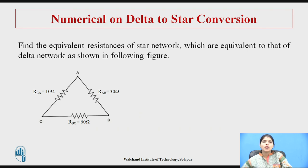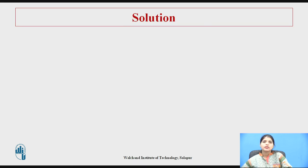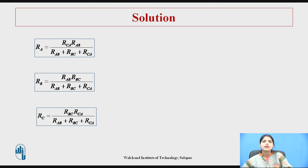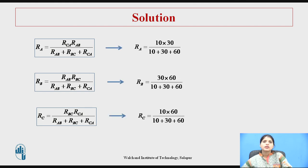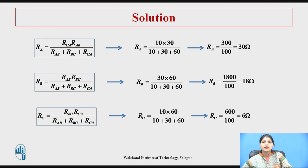Let us see the example of delta to star conversion. Find the equivalent resistances of the star network which are equivalent to the given delta network as shown in the figure. This is the delta network with given element values. Using the standard equations, we substitute the given values of the delta network into the equations to find the arm values of the star network.